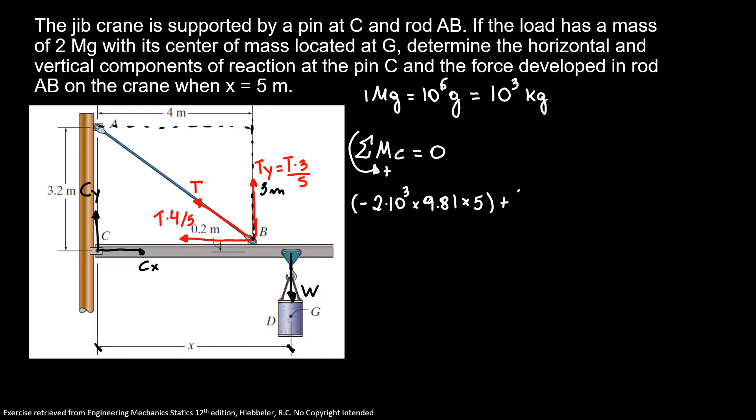Now I have plus our TY: 3T over 5 times 4, that's the distance from point C to our tension, plus 4T over 5 times 0.2 equals 0. In this problem, my point C is not aligned with our point B, so we have the TX doing moment about C.